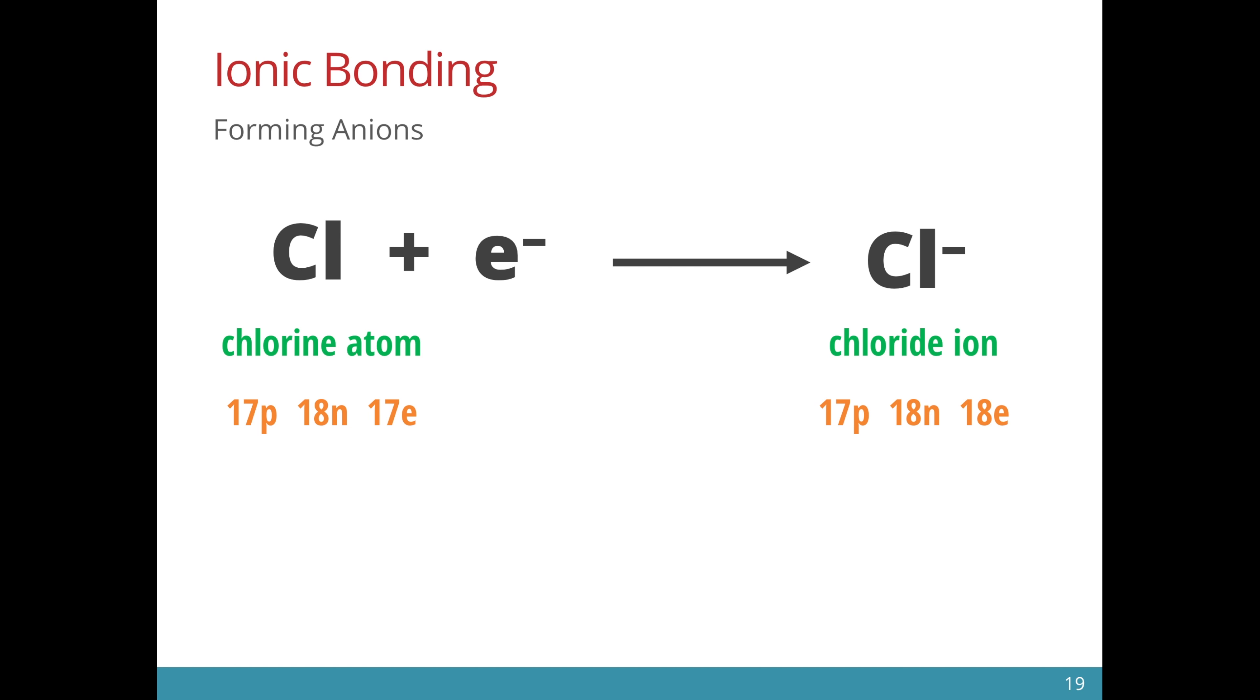In this equation, we show that the chlorine atom gains an electron to form the chloride ion. Since the chloride ion has more electrons than protons now, it becomes negatively charged.